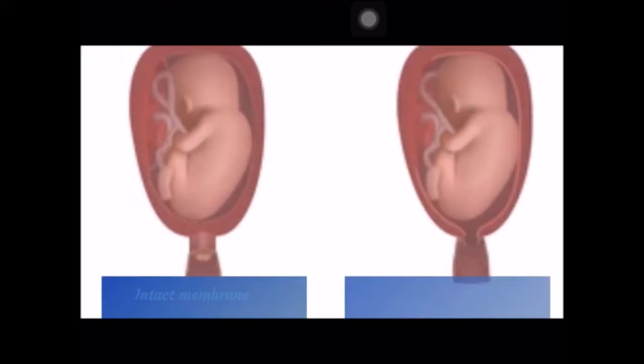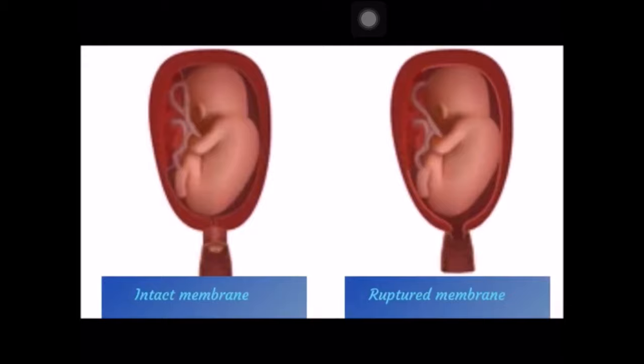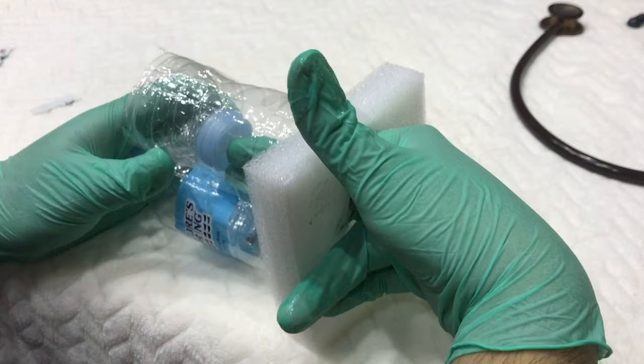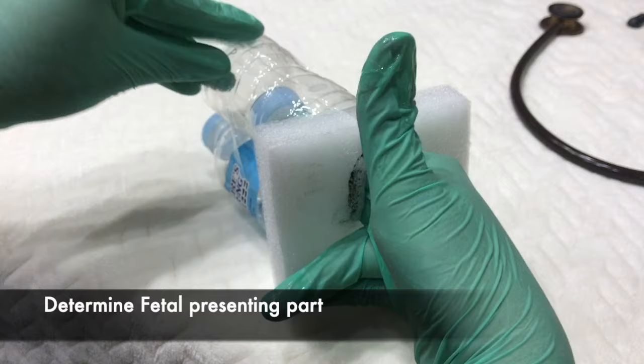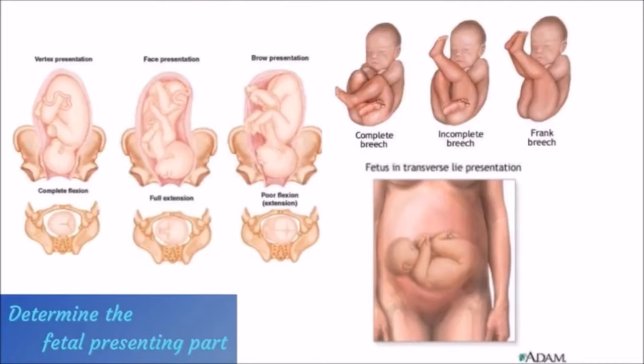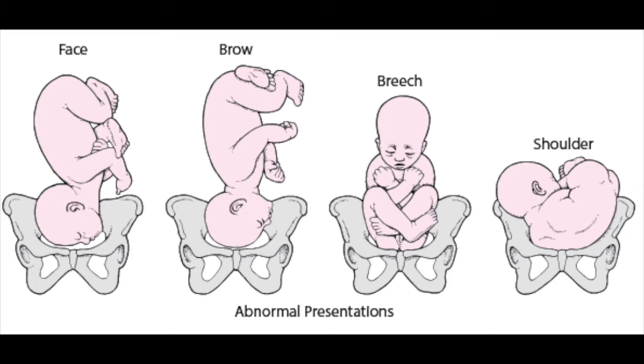Determine the state of the membranes, whether intact or ruptured. Determine the fetal presenting part, fetal position, and fetal station. The presenting part is palpated and differentiation, whether it is a vertex, face, or breech, is accomplished.